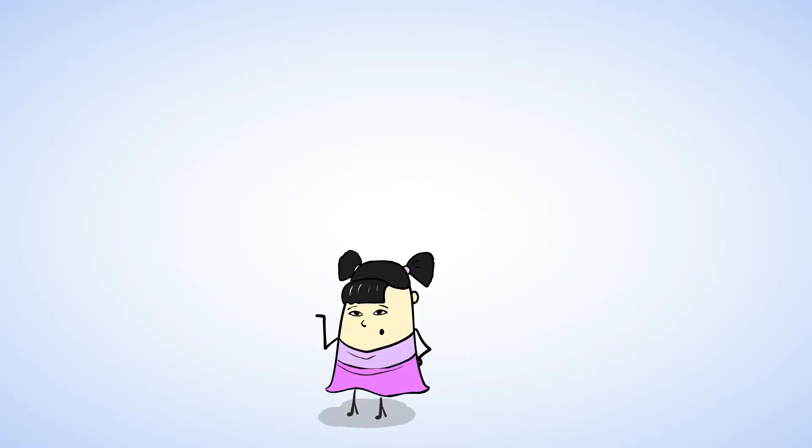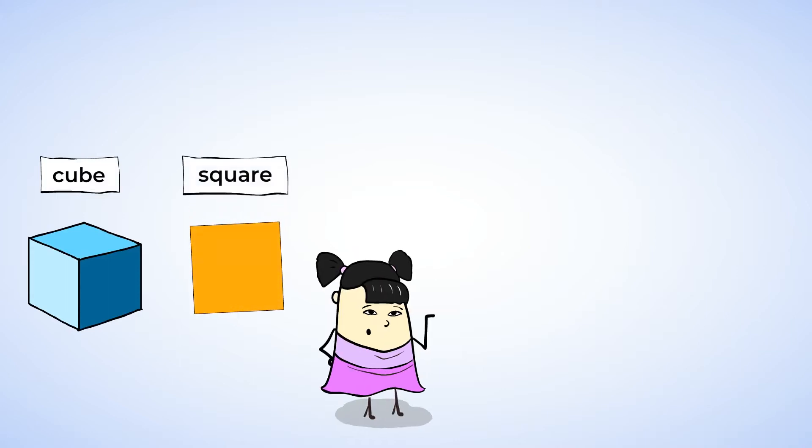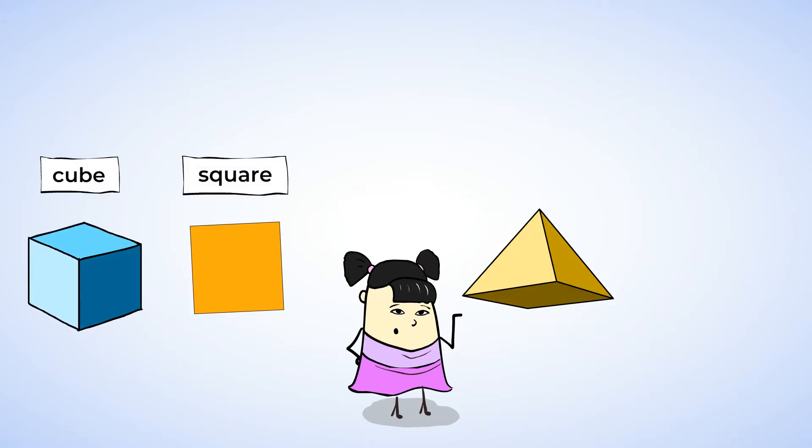Sometimes you can find flat shapes that look similar to solid shapes. Like the cube and the square. Like over here. When this 3D shape had some pieces that looked like triangles. And this shape here, it has circles on top and on bottom.